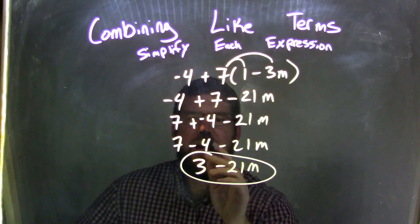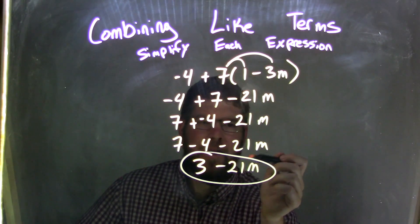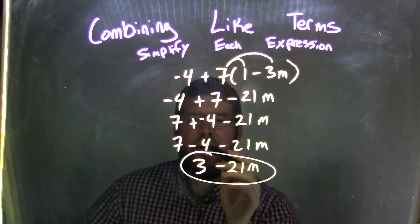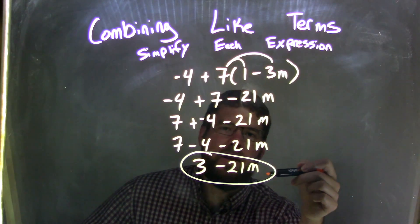And adding a negative, same thing as subtraction, is 7 minus 4. Still bringing down that minus 21m. And so 7 minus 4 is 3. Now we can see it more clearly. And so our final answer here is 3 minus 21m.